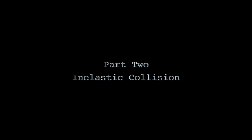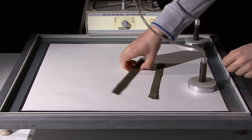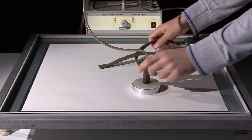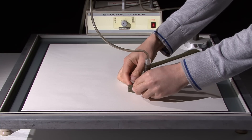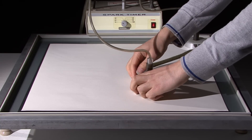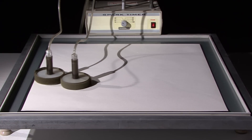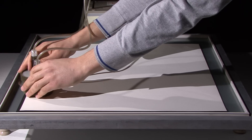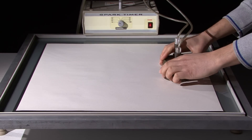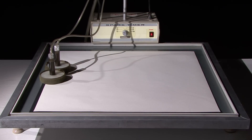Part 2: inelastic collision. In this part of the experiment, the pucks should stick together and move as a single object. For this purpose, Velcro bands will be wrapped around the pucks. It is necessary to wrap the bands tightly. After the collision, the pucks may begin rotating. Since you are not going to examine rotational motion, you should prevent this rotation. It may be necessary to make a number of trials before recording the data.